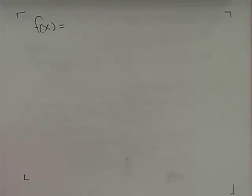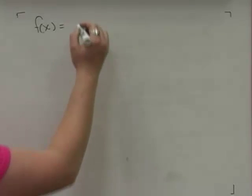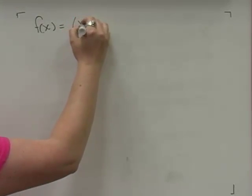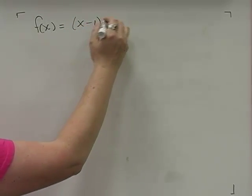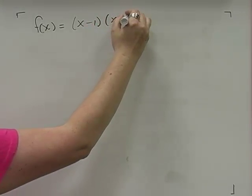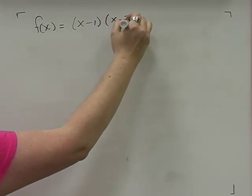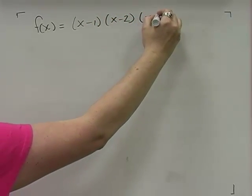This is Teresa Adams and what we're going to be doing today is graphing a polynomial function. We have f(x) = (x − 1)(x − 2)(x + 4).